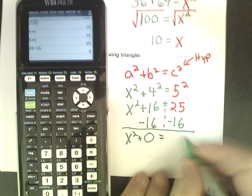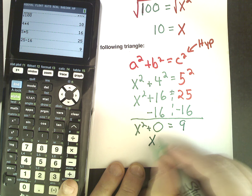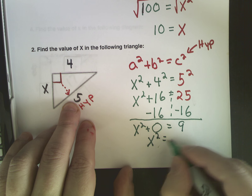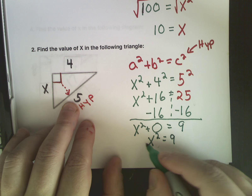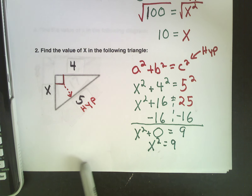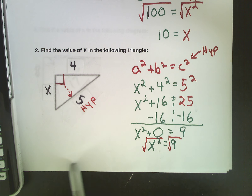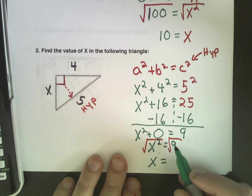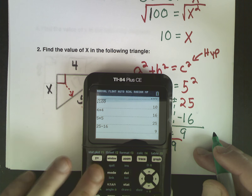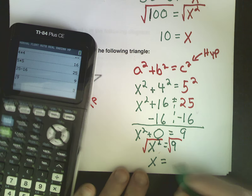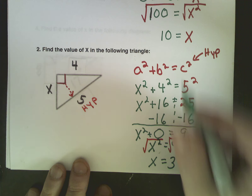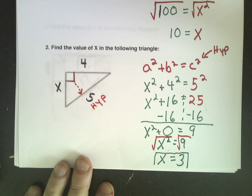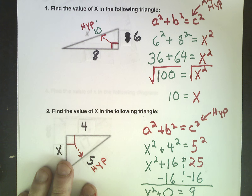I just bring down the x squared, since x squared is x squared — there's nothing we can do with that. Since I'm trying to solve for x, I've got to isolate the variable. I'm going to subtract 16 from both sides, because I want to get x on one side of the equal sign all by itself. 16 minus 16 is 0, x squared comes down, equals 25 minus 16, which gives me 9. So this is the one extra step you add when the hypotenuse is not the unknown — when you know the hypotenuse, you add this one extra step. x squared equals 9.